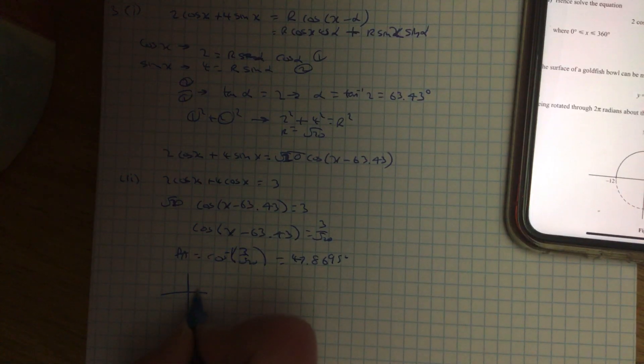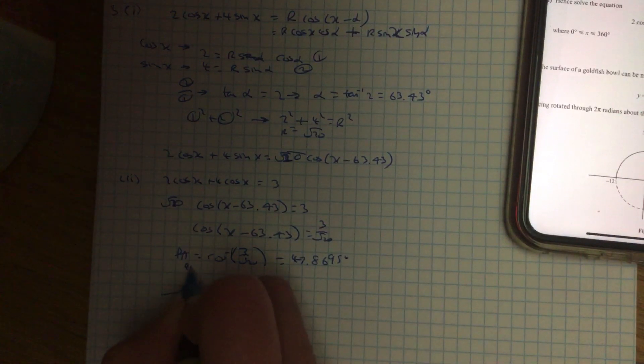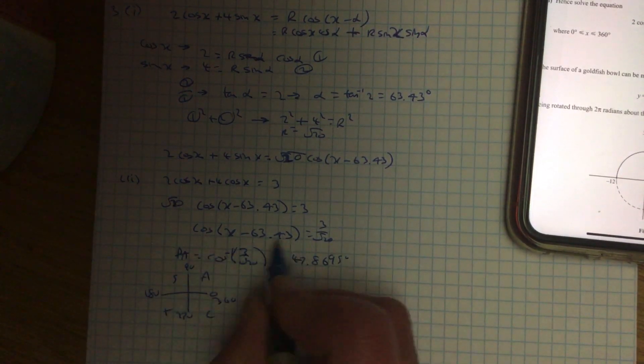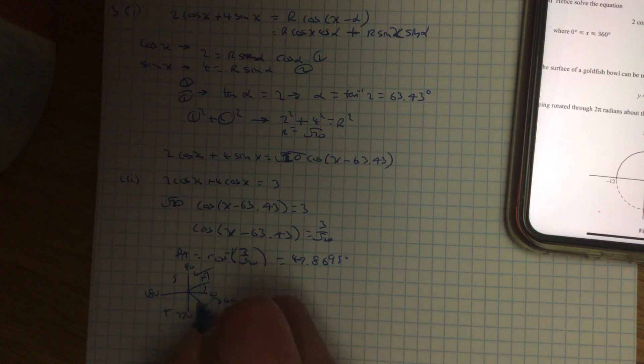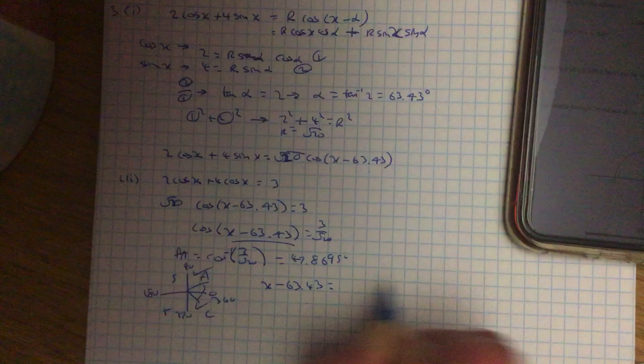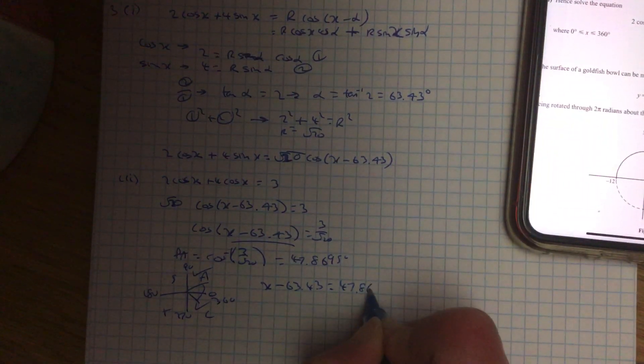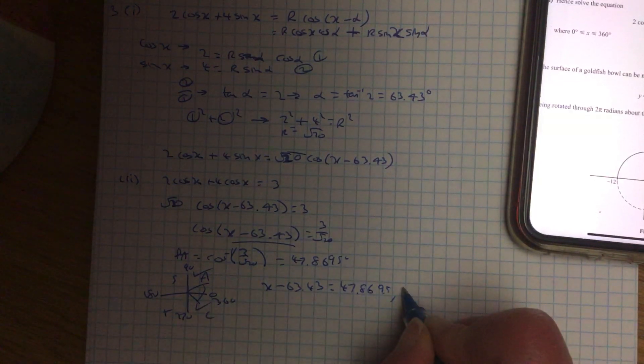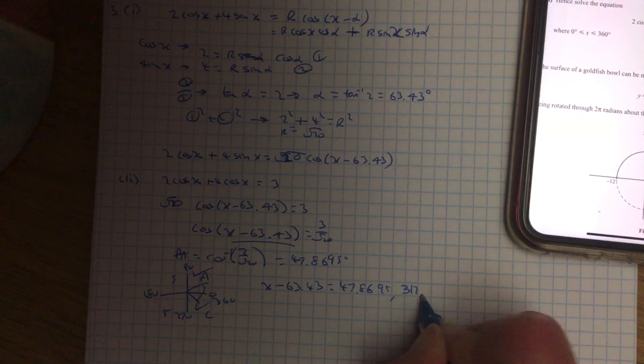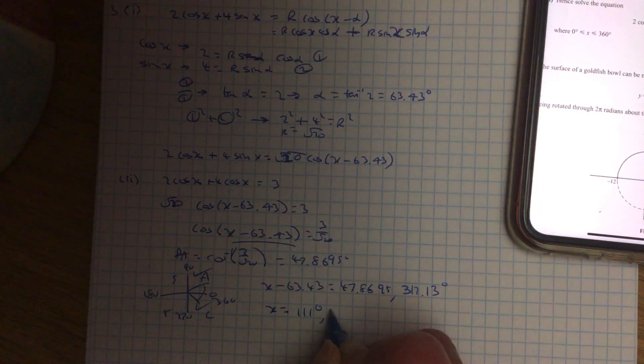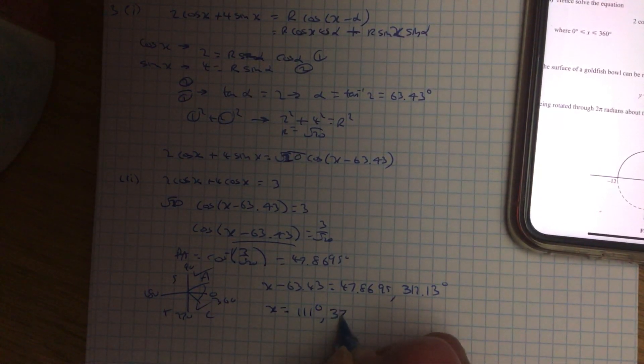Using your cast diagram, and I'm going from 0 to 360, so 0 to 90, 180, 270, 360, C, A, S, T. Cos is positive, so it's these two quadrants, so your angle, just make sure you put in your full angle, equals 47.8695, and the other one is 360 minus it, to give you 312.13. Now, bring your minus 63 over to each, and the first one becomes 111, and the next one becomes 376.